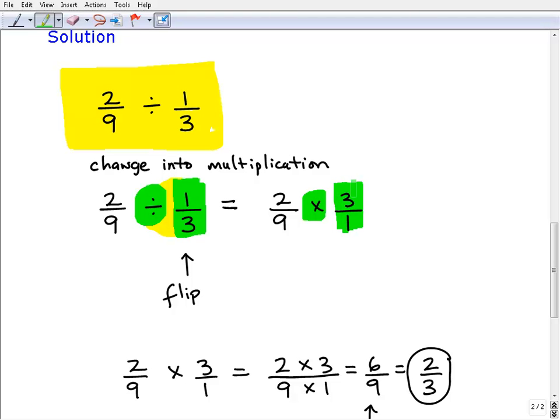All right, so now we have a new problem: 2/9 times 3 over 1, which is equivalent to this problem.